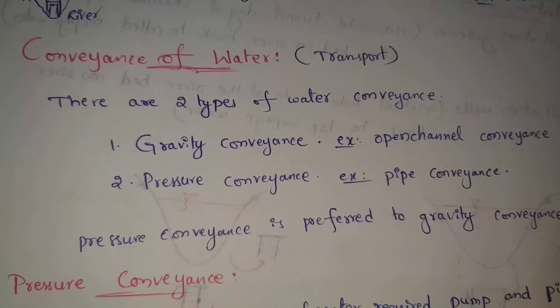For example, we are looking for the Nagarjuna Sagar dam and Srisailam dams. These dams have left canal and right canal. These are open channels, and when the water is released from these canals, this is gravity conveyance.